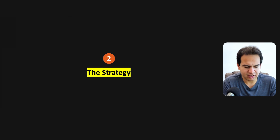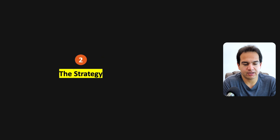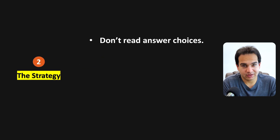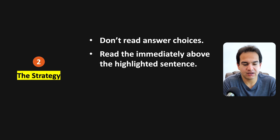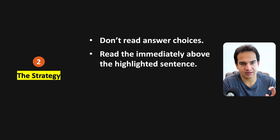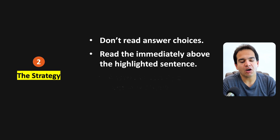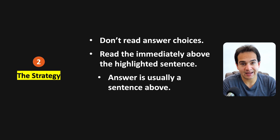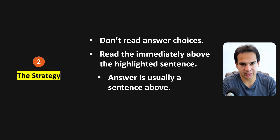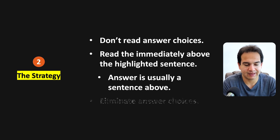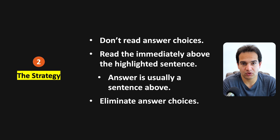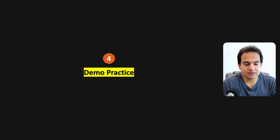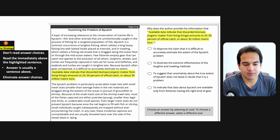So, what is the strategy? It's real simple. Don't read answer choices — don't waste time there. Instead, read the sentence immediately above the highlighted sentence, because often the answer is in the sentence above. It's usually in the neighboring sentence. Sometimes it will be below, but often it is above. Then eliminate answer choices. Let me show you this in a demo practice.